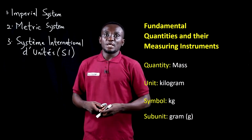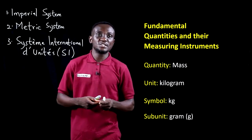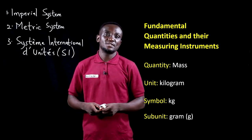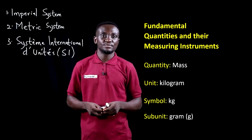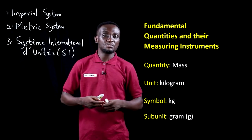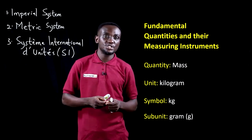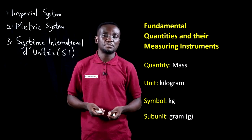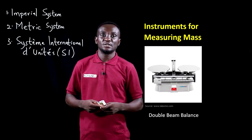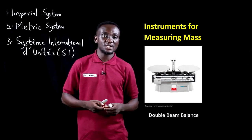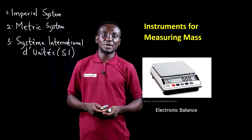They came up with a number of fundamental quantities and their measuring instruments. In measuring mass, the unit is the kilogram, with the symbol kg, and the subunit is the gram. The instruments used to measure mass include the beam balance, as seen in this image, and the electronic balance.